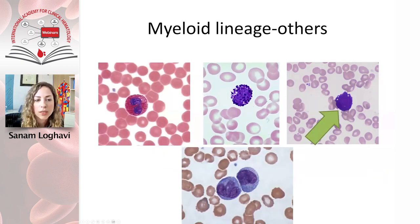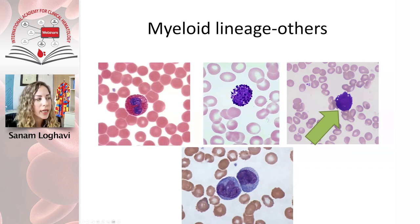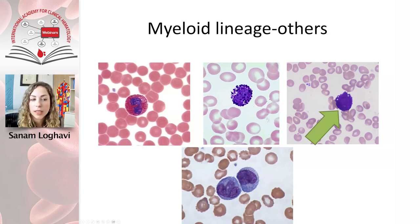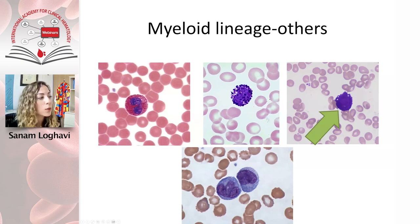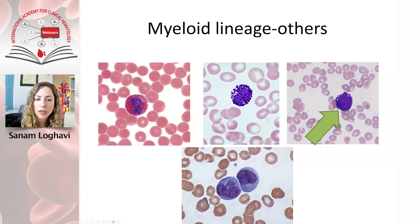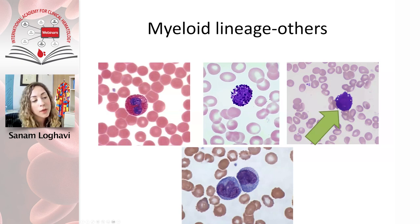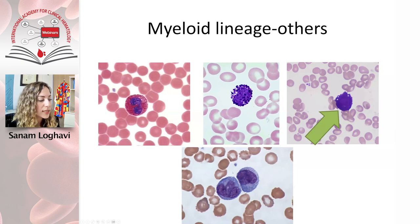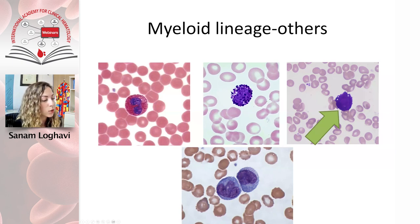Let's look at other myeloid lineages. Here's an eosinophil, a basophil, and a mast cell. A common trainee question is how to differentiate a mast cell from a basophil — both have basophilic granules. In a basophil, you can still see the nucleus and the granules are very coarse. In a normal mast cell, the granules cover the entire nucleus making it very difficult to see, and the granules are finer but equally purple. Here are also a couple of reactive-looking monocytes with more blue cytoplasm than normal.